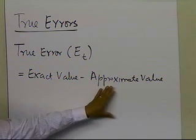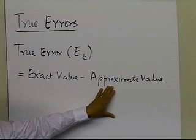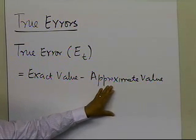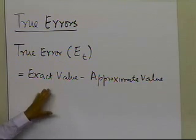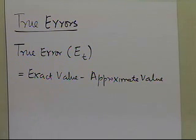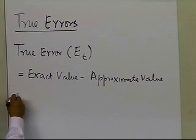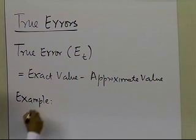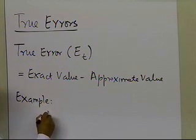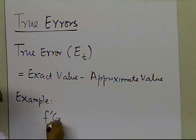For example, if you have developed an approximate way of differentiating a function, you would like to compare it with something from your differential calculus class — an exact value. We'll take an example to explain this. Let's go ahead and take an example to see what we mean by calculating true errors. Suppose somebody gives you a formula for calculating the derivative of a function.